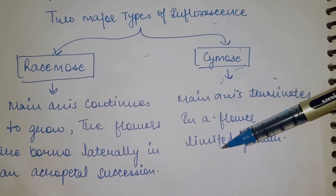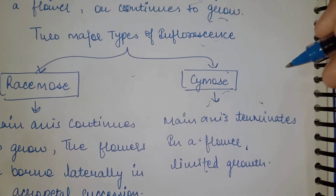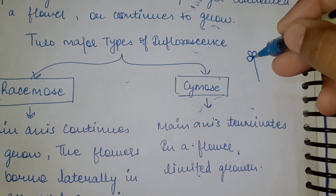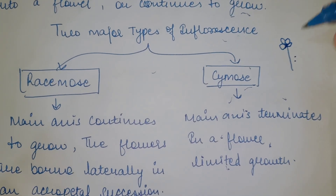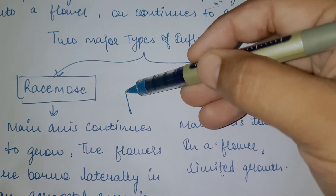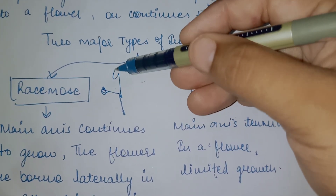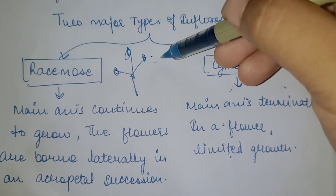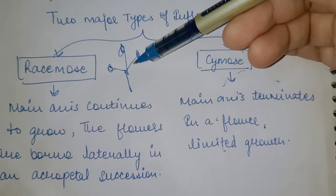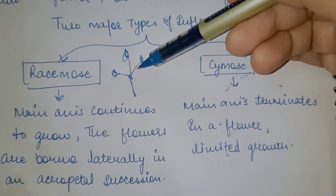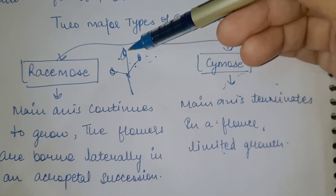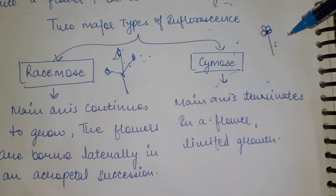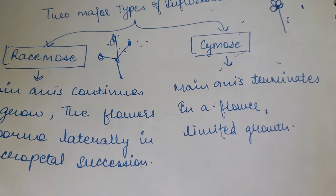In Cymose inflorescence, the main axis terminates into a flower and has limited growth. The stem grows and the apical part becomes a flower, stopping further growth of that axis. In racemose, different lateral stems keep coming and flowers keep growing at multiple points.